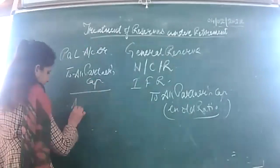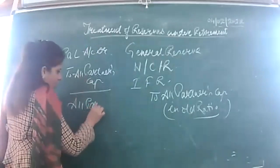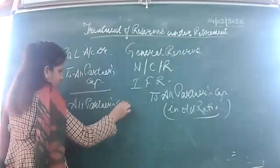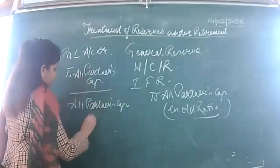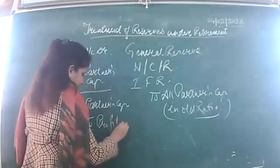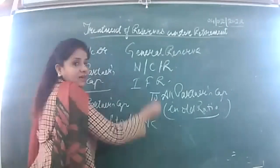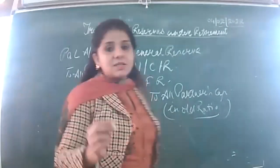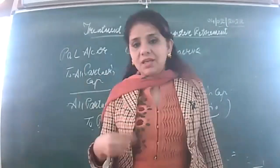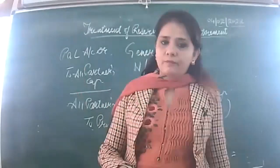If there is a loss appearing on the asset side, then all partners' capital accounts are debited to profit and loss account. Similarly, if advertisement suspense is appearing — most of the time it appears in your balance sheet on the asset side — you are supposed to write it off.